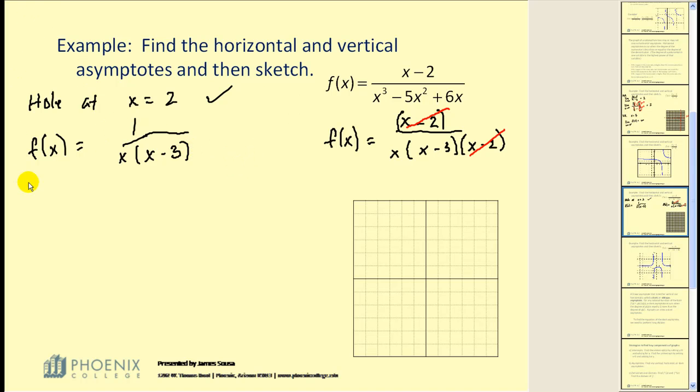Let's find our horizontal asymptote, if there is one, by taking the limit of the function as x approaches infinity or negative infinity. Now, I notice right away that the degree of the denominator is degree two, the degree of the numerator is zero. This limit is equal to zero. Therefore, there's a horizontal asymptote at y equals zero. Let's sketch that.